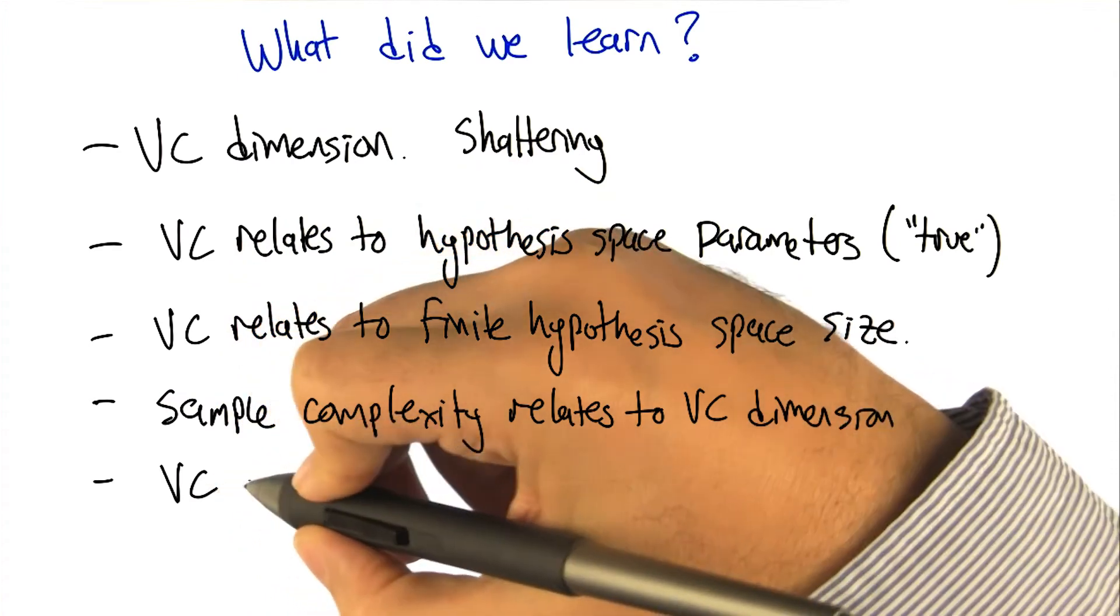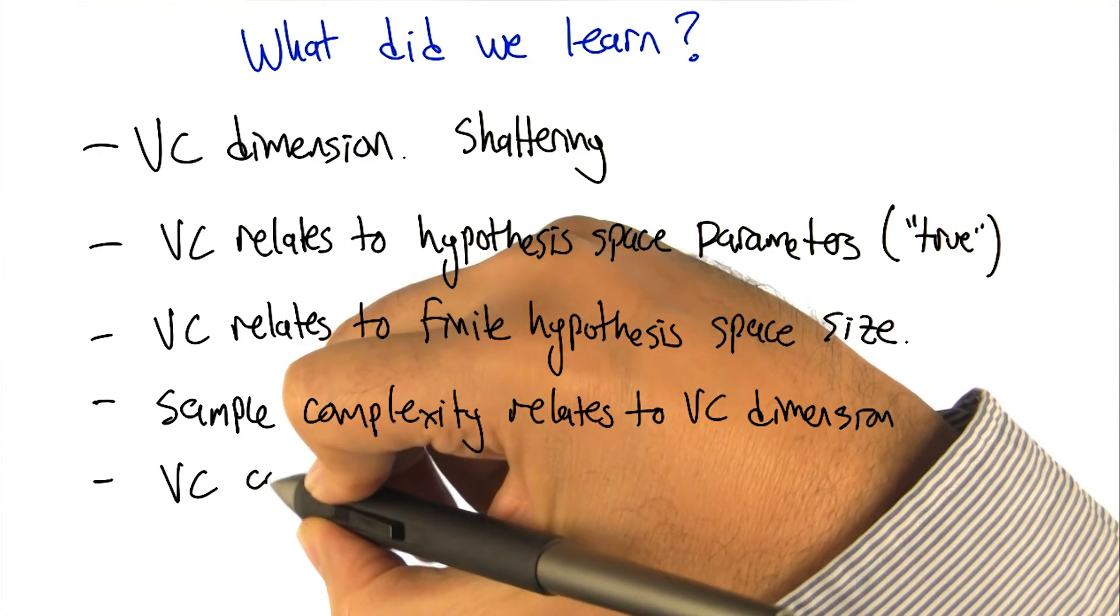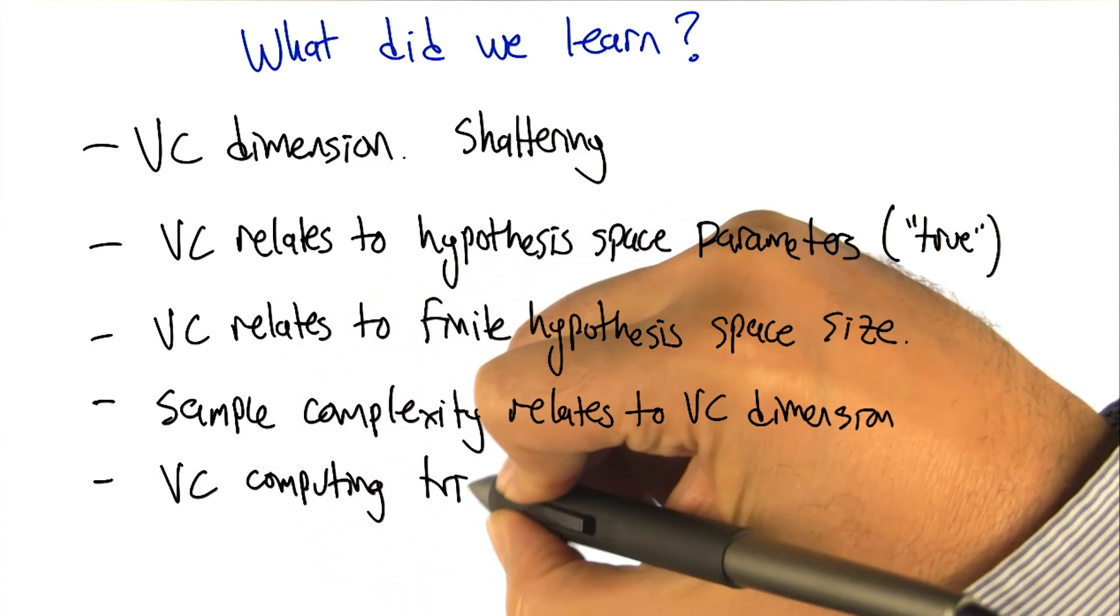And we learned a little bit, some tricks, or at least went through some examples of how to actually compute the VC dimension. In particular, we learned that you need to give an example to find the lower bound, and you need to prove an upper bound.